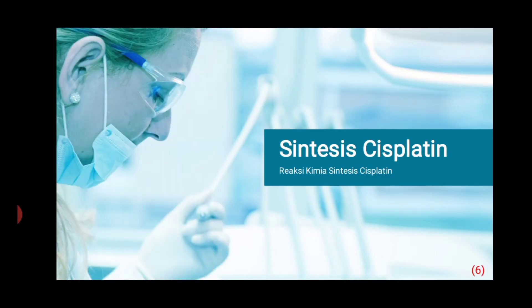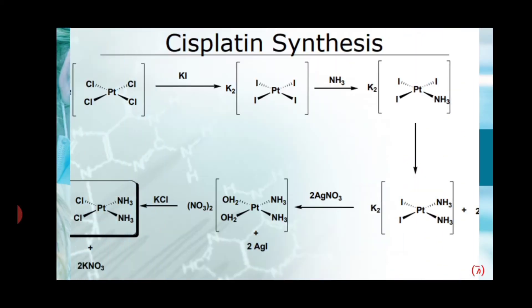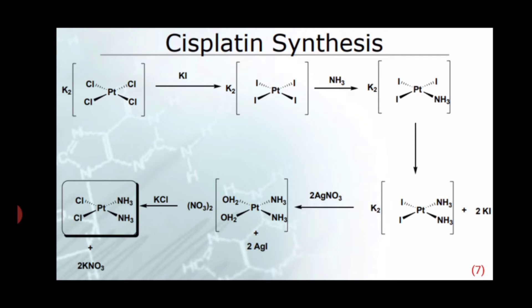Sintesis Cisplatin. Cisplatin disintesis dengan memanfaatkan efek trans antara kalium tetrakloroplatinat (II) atau K2[PtCl4] dengan ligan amina. Struktur kimia yang terbentuk ini sesuai dengan syarat struktur klasik untuk menjadikan logam platinum memiliki aktivitas anti-kanker yang sudah dijelaskan sebelumnya.